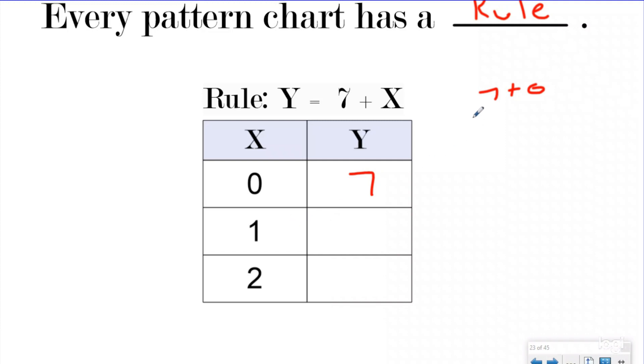If we have X equals one and we follow the same rule, then seven plus one would be eight. So if we put in a one and follow the rule seven plus X, we're going to get a Y that equals eight. And again, two plus seven would be nine. So when X is two, Y is going to equal nine.